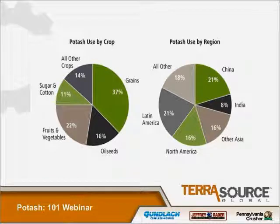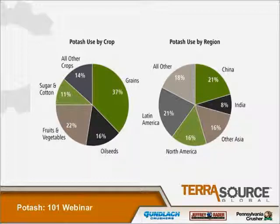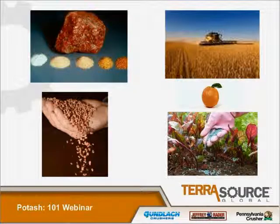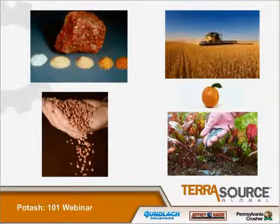Potash used by crop — you can see the different types of crops that require potash: 14% for all other crops, sugar and cotton 11%, fruits and vegetables 22%, grains 37%, and 16% for oilseed. Potash used by region: Latin America 21%, North America 16%, Asia 16%, India 8%, China 21%. In the pictures you can see potash ore and granular products in the upper left, a granular product in the lower left, wheat in the upper right, and fruit trees in the lower right.